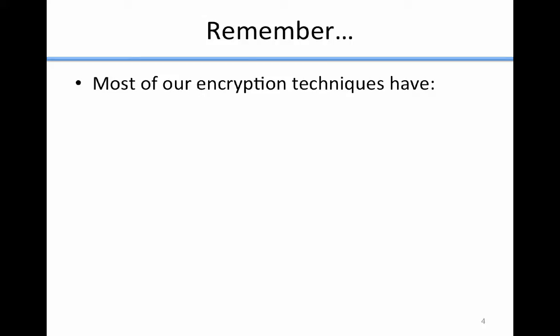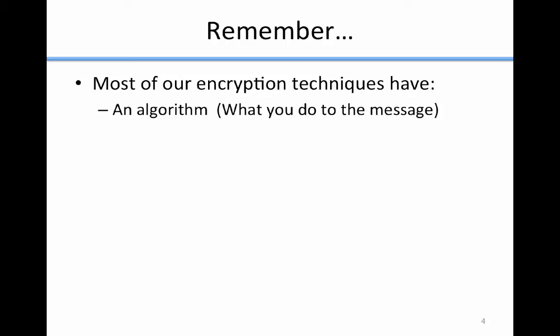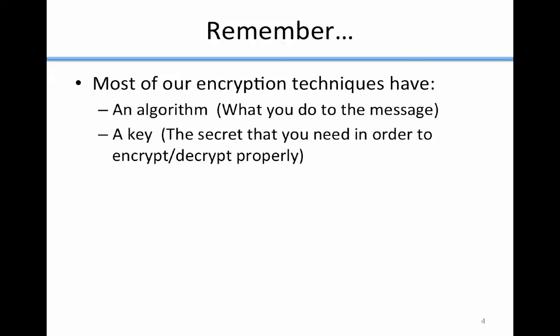One important thing to remember from our discussion of simple cryptography is that most of our encryption techniques have two basic things. The first is an algorithm, which is what you do to the message in order to encrypt it. The second is a key, which is the secret that you need in order to encrypt or decrypt properly. The algorithm is not a secret, but the key is.